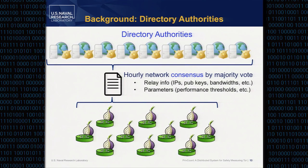So we have all these relays in the network — how do clients learn about them? This is facilitated by nine directory authorities, trusted relay operators who run these authorities. They look over all the relays that exist and vote on which relays are currently valid, stable, and up and running, creating what's called a network consensus. This contains relay information such as IP address, public keys, bandwidths, and performance parameters. This document is distributed to all clients, who use it when building their circuits.